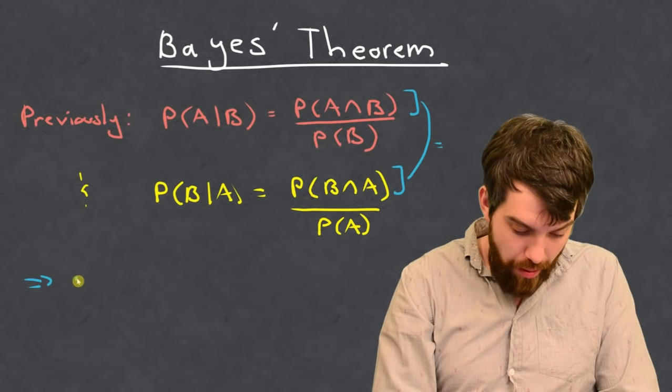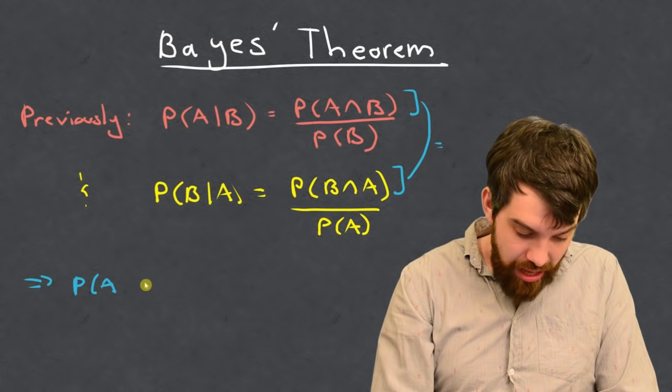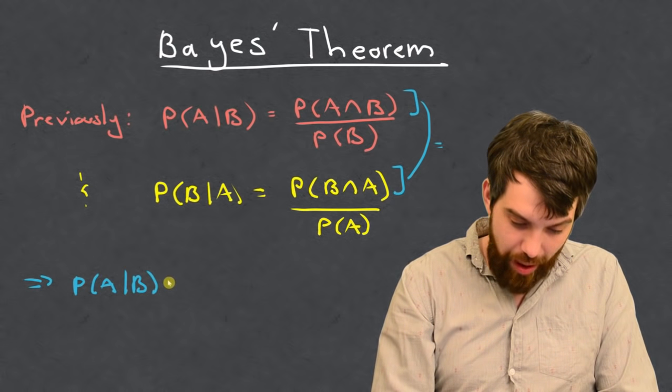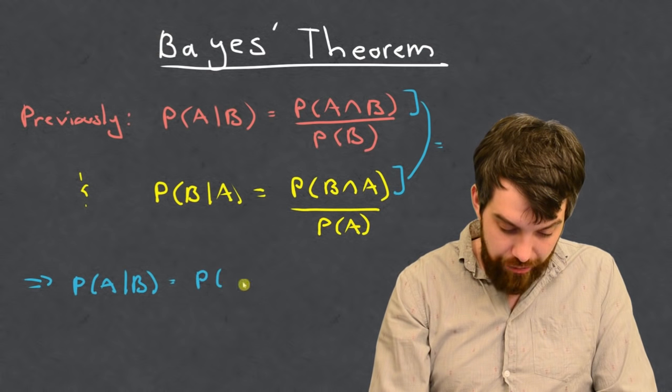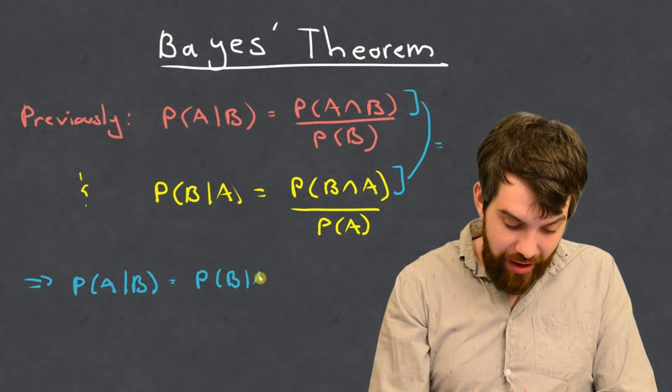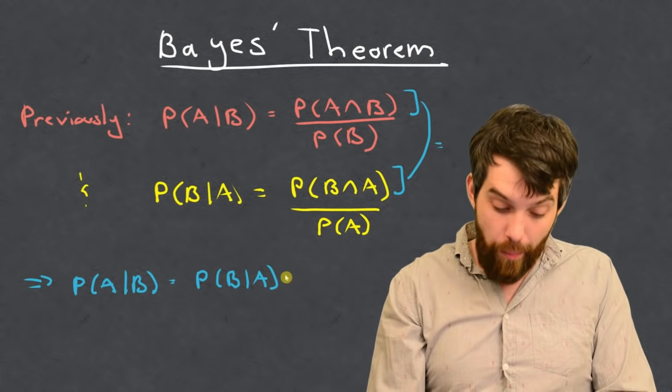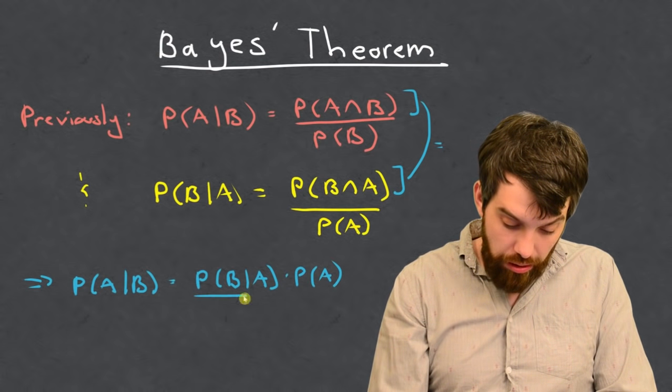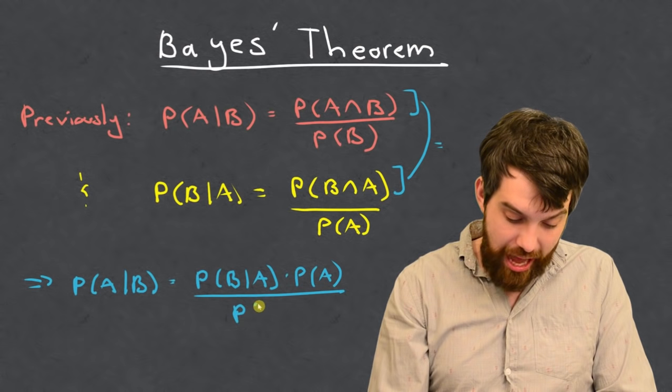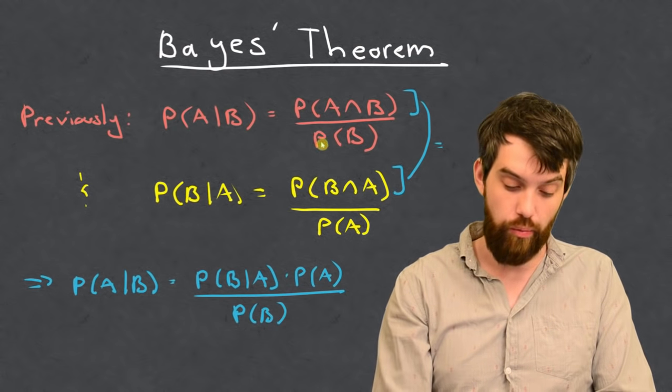So, what that's going to give me is that the probability of A given B is equal to, well, the probability of the intersection, but I'm going to rewrite that as the probability of B given A multiplied by the probability of A, and then all divided out by the probability of B, as I have down in the bottom right here.